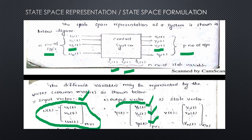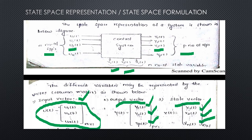The state variables are denoted by the letter x. If all the state variables are placed in a column matrix, that is called a state vector. The state vector is a column matrix whose elements are the state variables. For a system with n number of state variables, the state vector is x(t) = [x1(t), x2(t), ..., xn(t)].